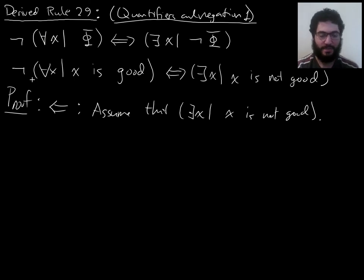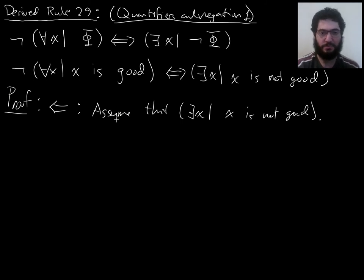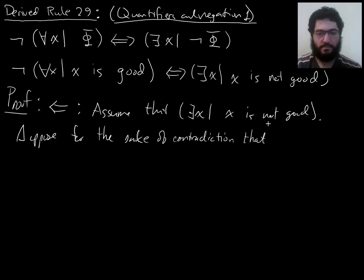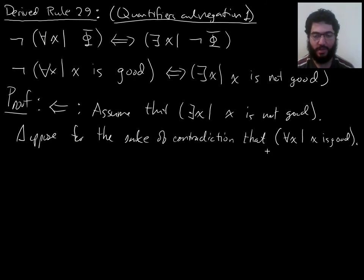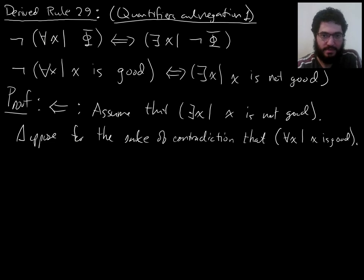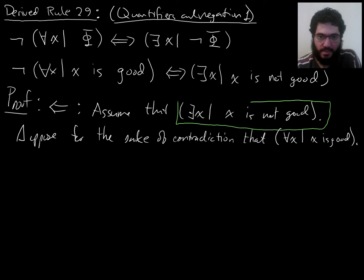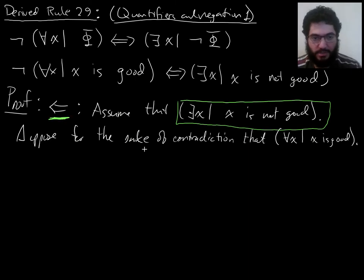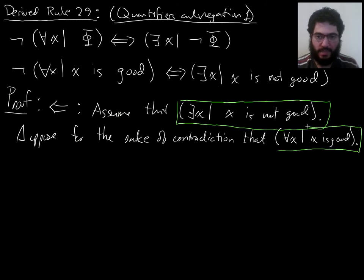Proof by contradiction. If I take the strategy of proof by contradiction, then in order to prove not-for-all something, I get to assume for the sake of contradiction for-all something. So that's something I can work with — I have rules that tell me how to work with it. So suppose for the sake of contradiction that in fact everything is good. Now our goal is to get a contradiction, and if we get a contradiction, then we can conclude that in fact it's not the case that everything is good. So now I've got these two assumptions to use.